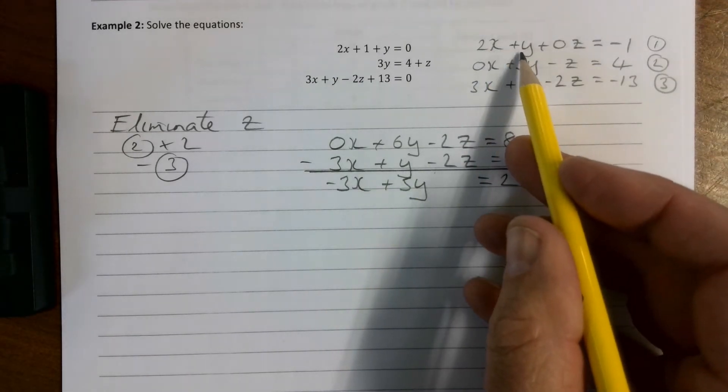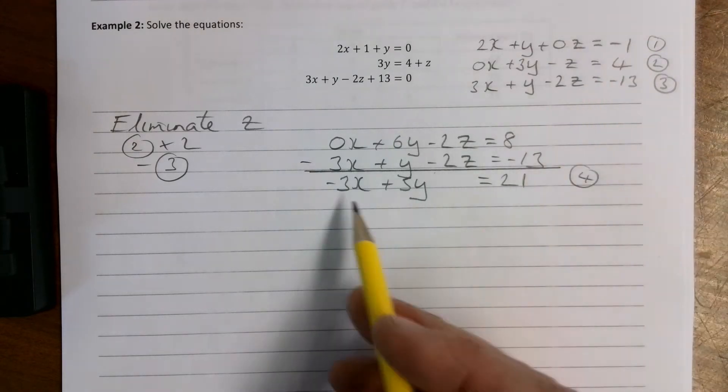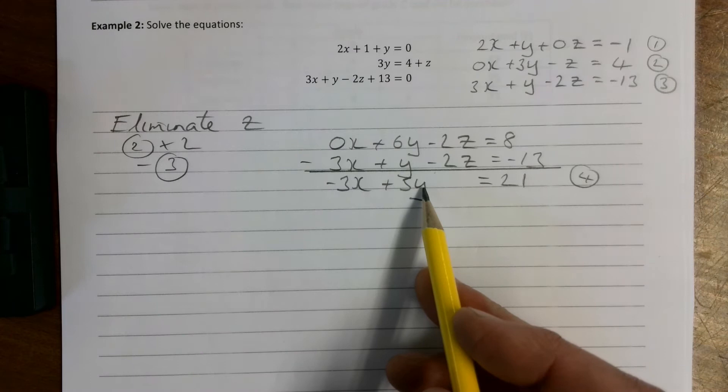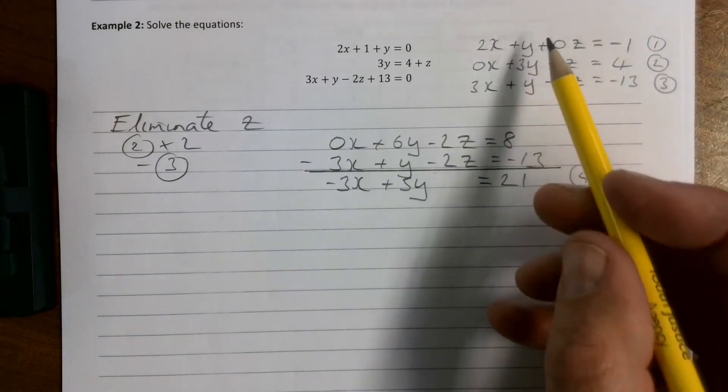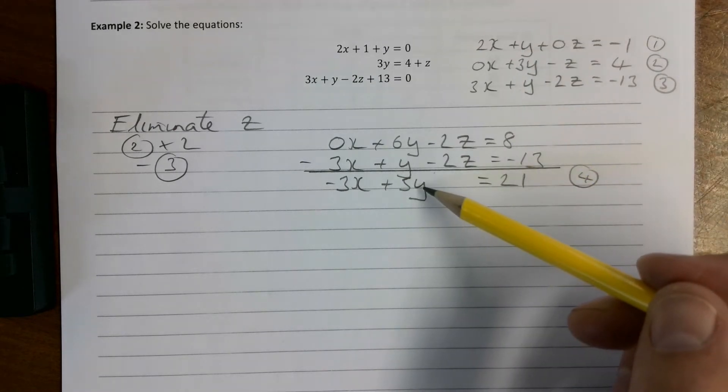So we have an equation now with x and y in it, and note equation 1 just has x and y in as well so we can just use those ones. With minus 3x plus 5y and then with 2x plus y, can you see if we times this one by 5 then it's going to make the y's the same?